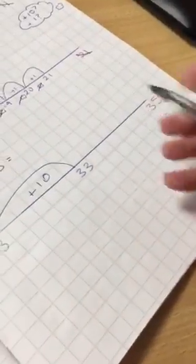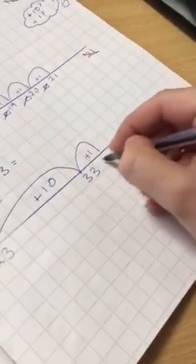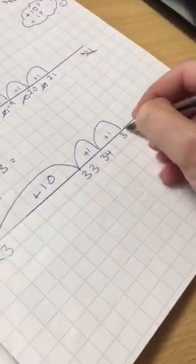Right, can I add another 10? No, that would be far too high. So it's 1's. Add 1, 34. Add 1, 35.